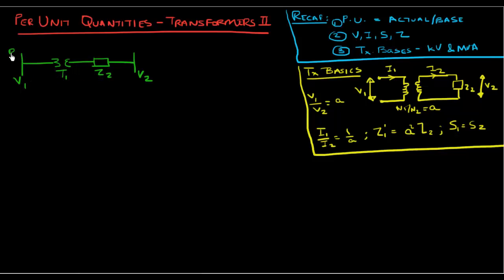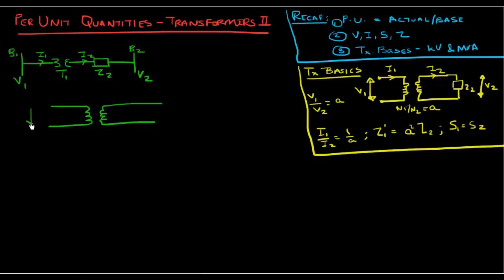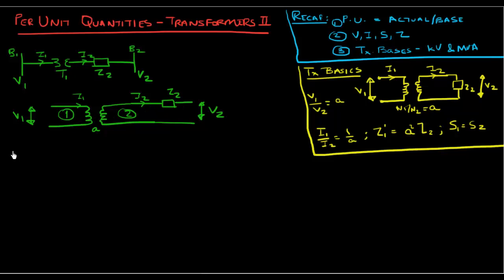This is bus one and bus two, with secondary current and primary current flowing as shown. As I showed last time, this can be drawn out as an equivalent circuit with voltage V1 on the primary side, an impedance, voltage V2 on the secondary side, and a turns ratio 'a'.